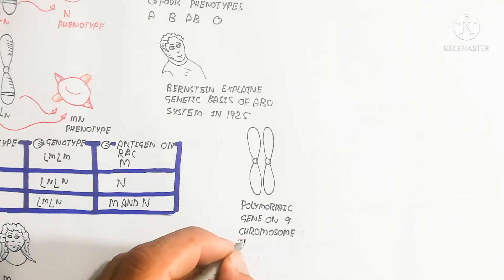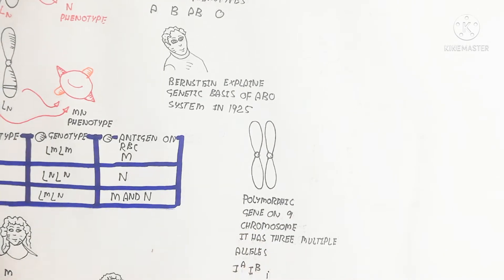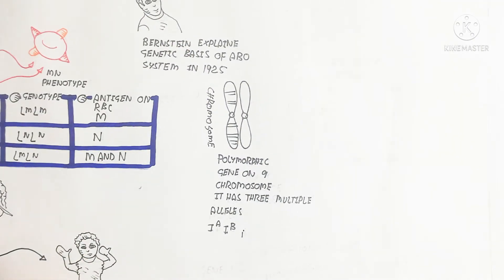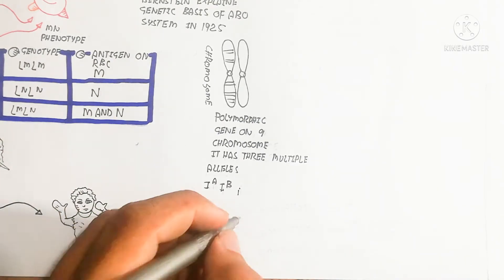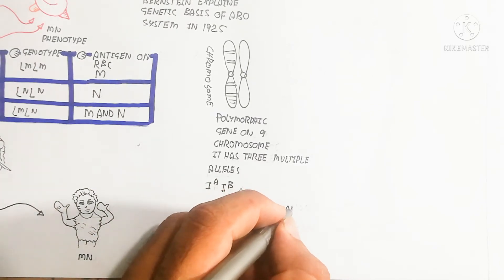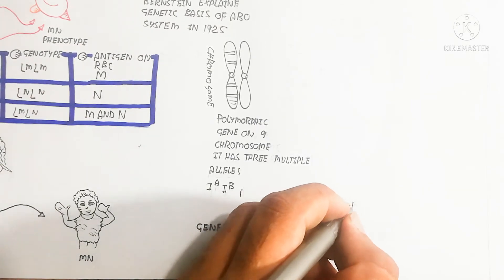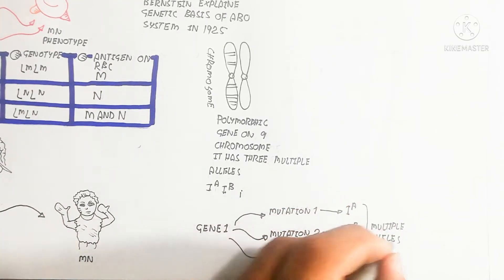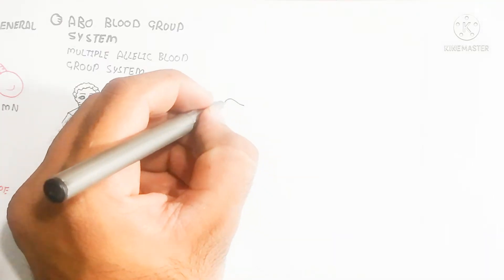The ABO gene is located on chromosome 9 and is a polymorphic gene with three multiple alleles. The chromosome contains many genes that express to give a blood group. These are I^A, I^B, and small i. Mutation 1 produces I^A, mutation 2 produces I^B, and mutation 3 produces lack of antigen A and antigen B. These are the multiple alleles produced.